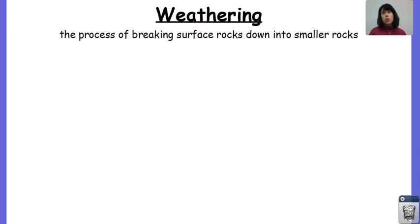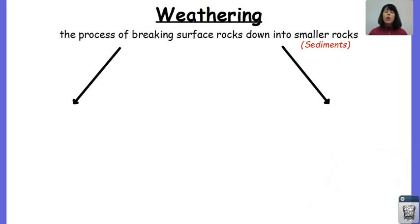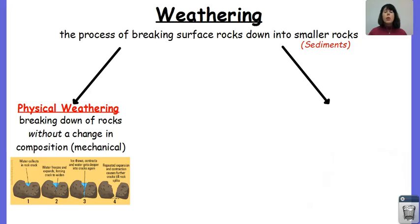When we break down those surface rocks into smaller rocks, aka sediments, we can break them down one of two ways. One way is by physical means — we call this physical weathering — and this is when the rocks are broken down without a change in their composition. We also refer to this sometimes as mechanical weathering. In this picture, we have a rock being broken into smaller rocks or sediments due to frost action, which we'll go over a little bit later in this video.